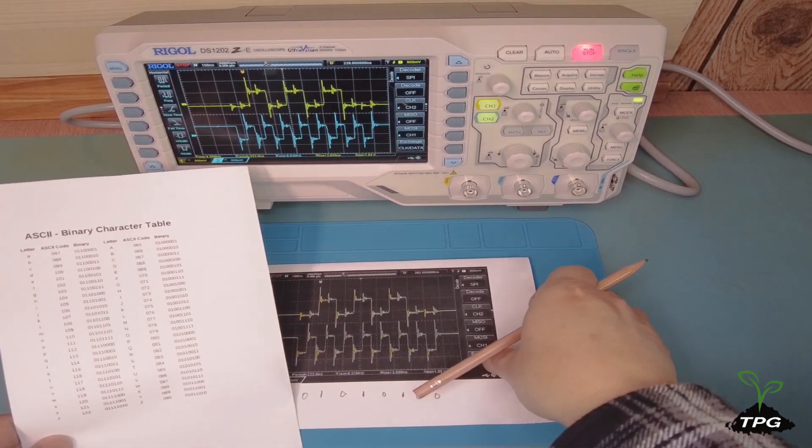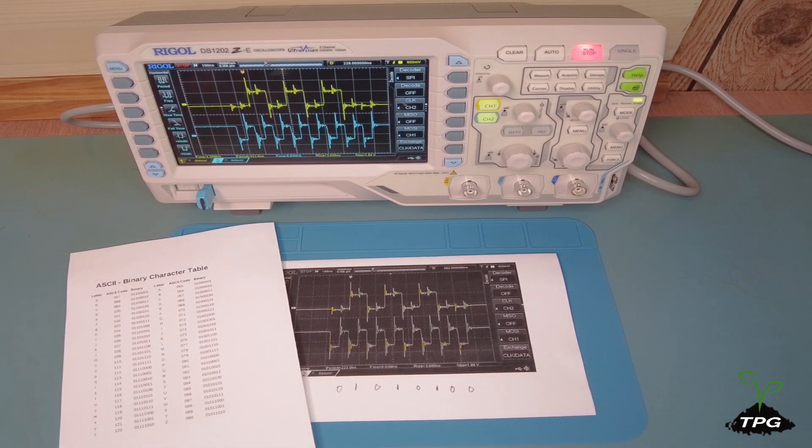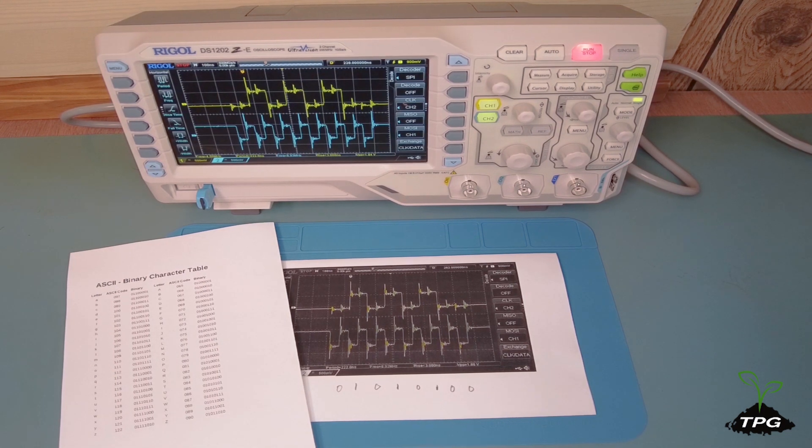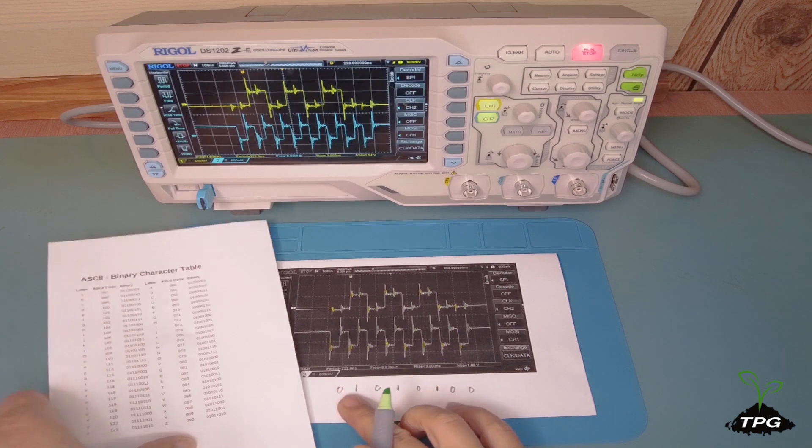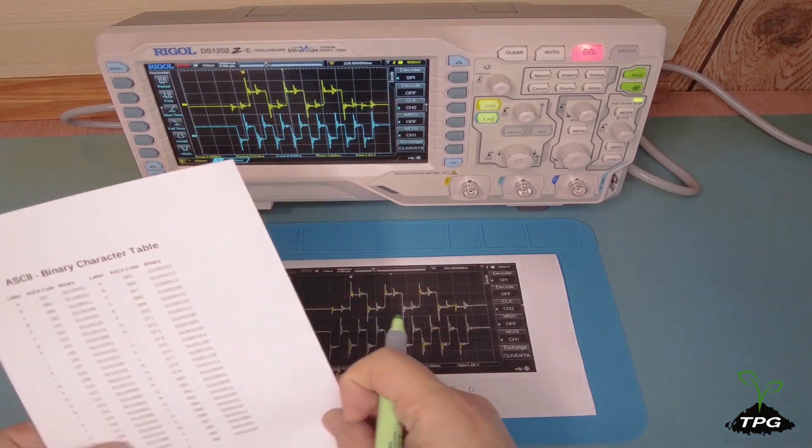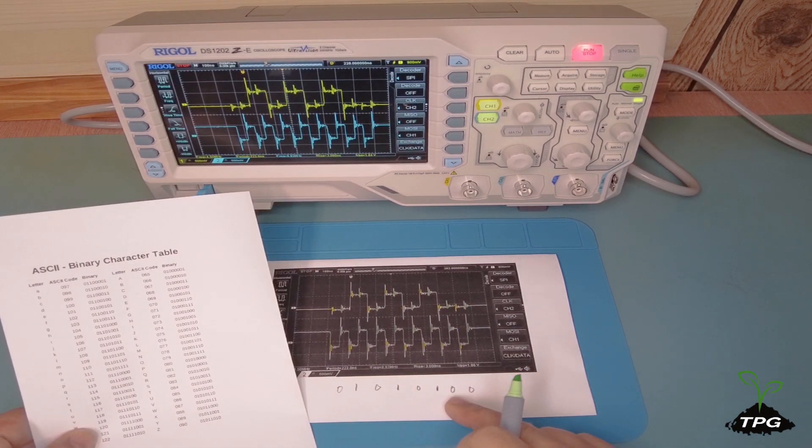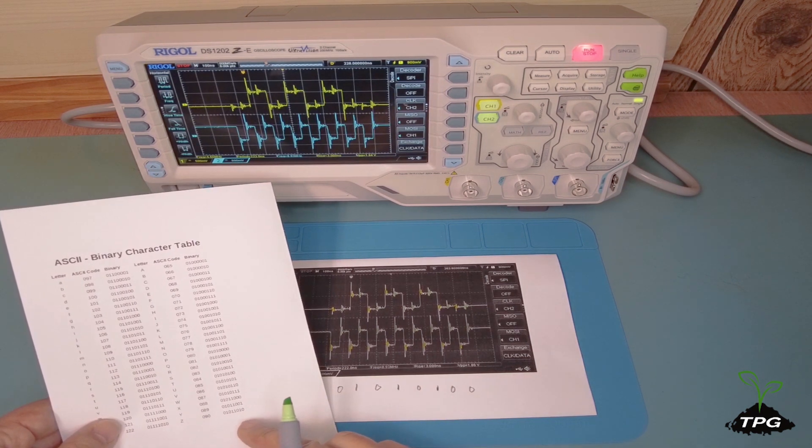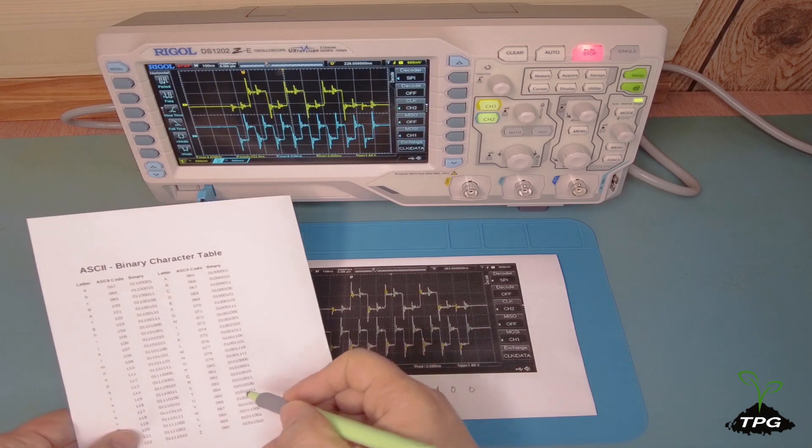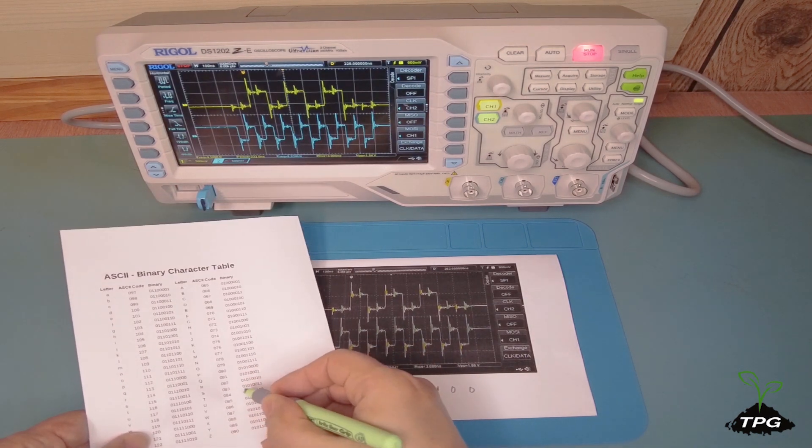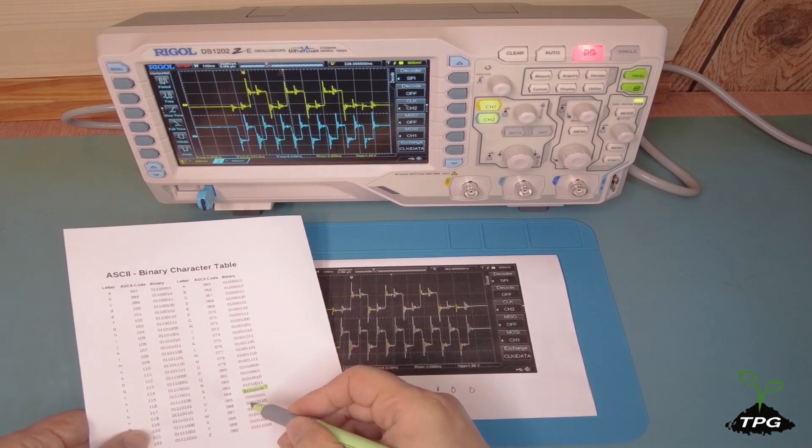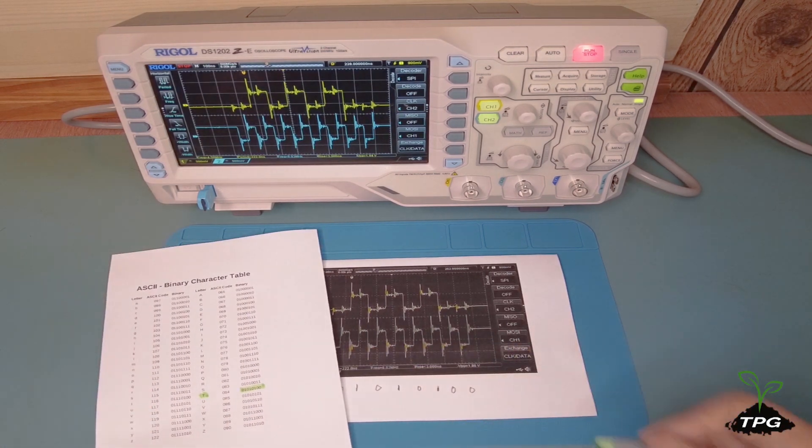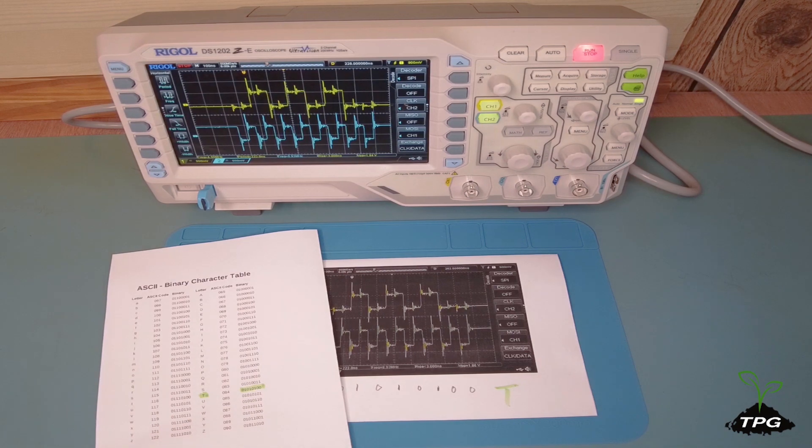Referring to the American Standard Code for Information Interchange binary character table, we can determine the corresponding letter character that matches the binary value we just decoded. This first byte represents the letter character T.